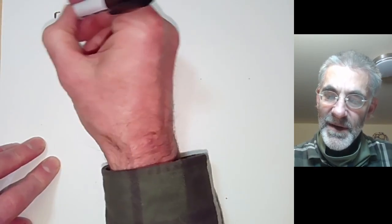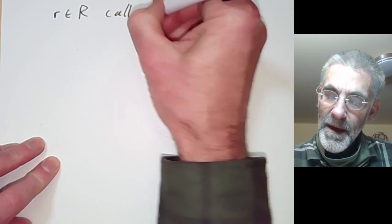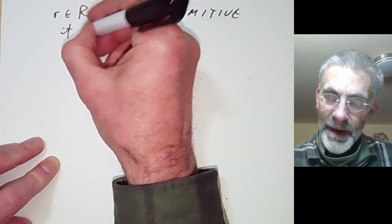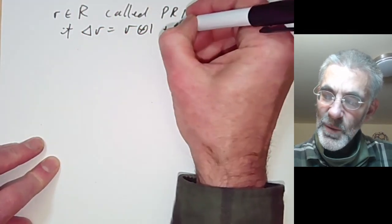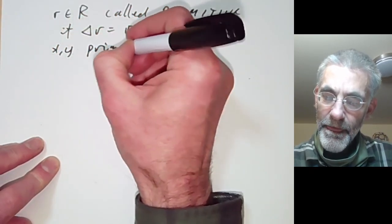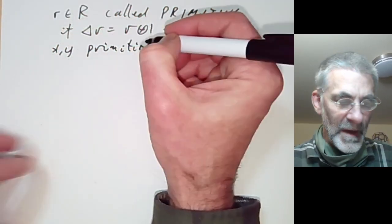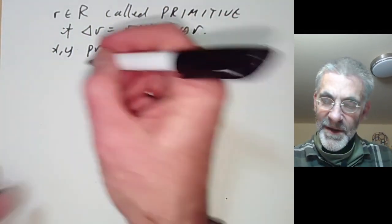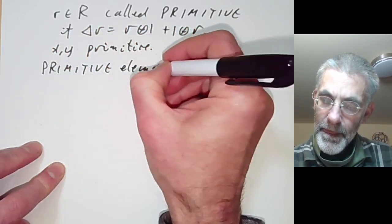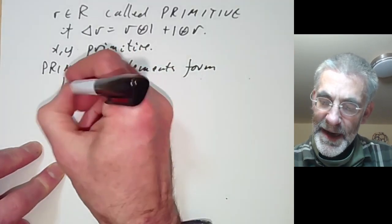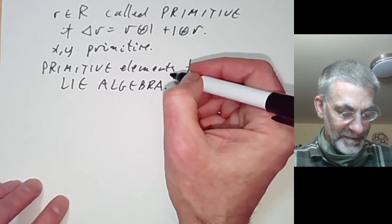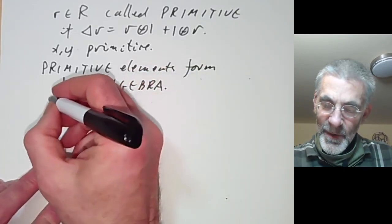We say an element r in R is called primitive if Δ(r) = r⊗1 + 1⊗r. In particular, x and y are primitive. The primitive elements form a Lie algebra.